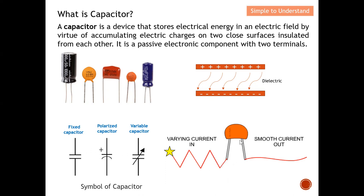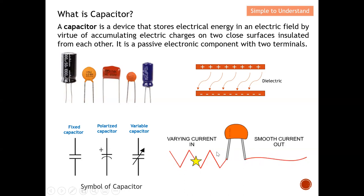Now let's look at the key role of a capacitor. From this diagram, you can see that at the input the current varies quite drastically. After passing through the capacitor, the current is smoothed out. So at the input of the capacitor we can have large variations in current, but after passing through the capacitor the current is typically smoothed out. This is the key purpose of a capacitor — to control and stabilize the current.